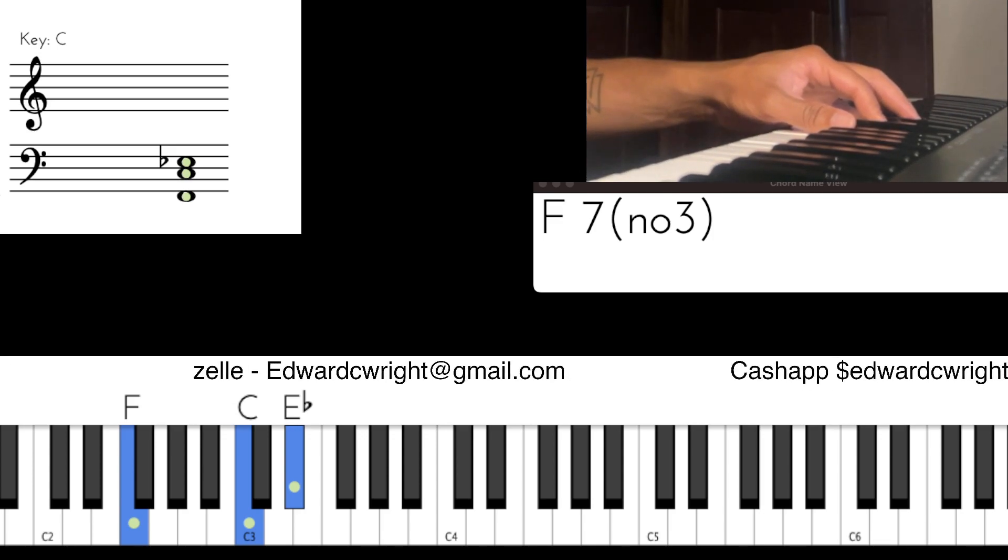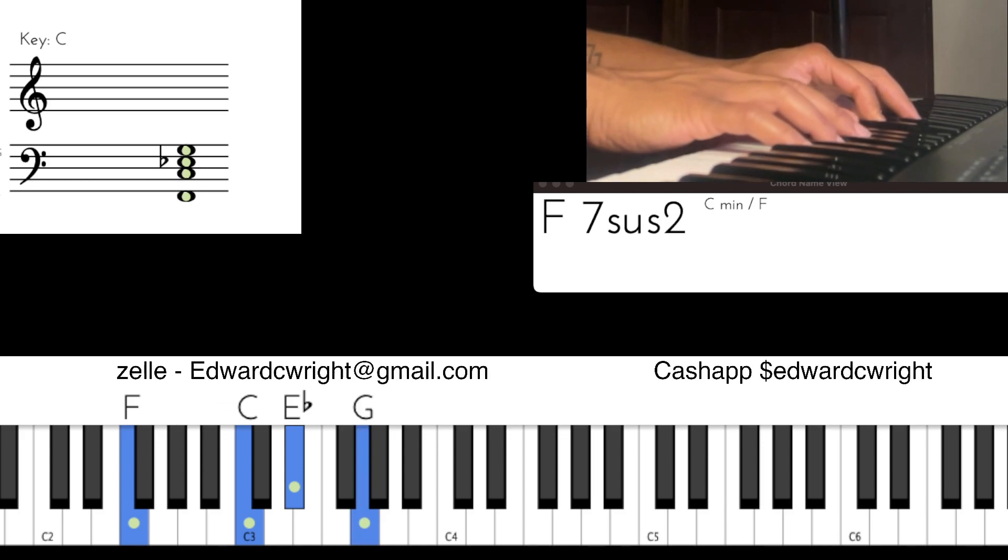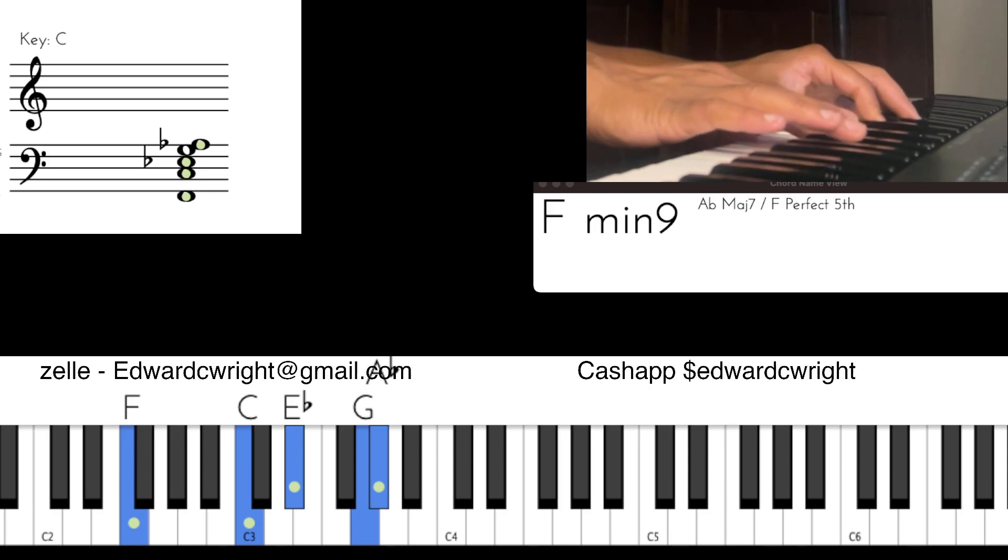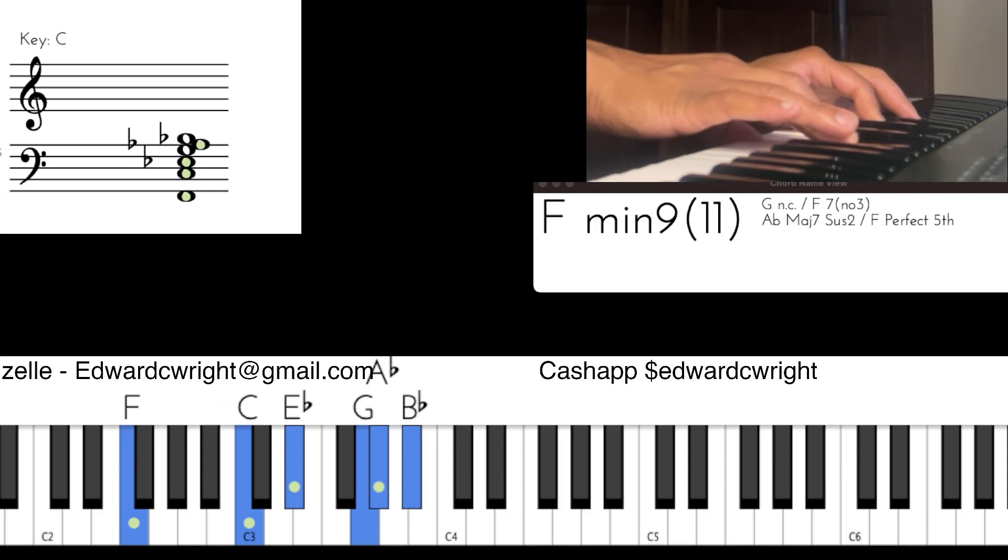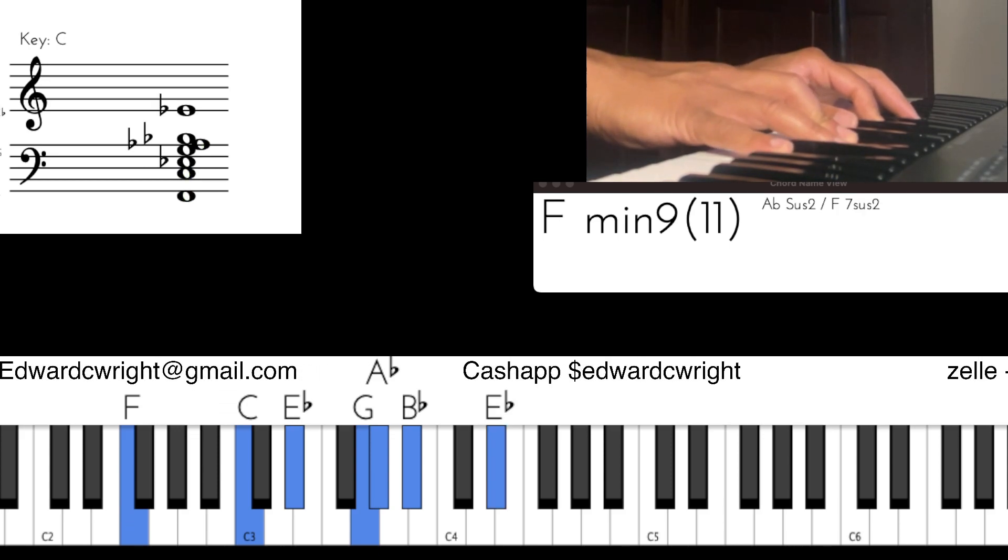F, C, and E flat. Now in our right hand, we have the nine, which is the two, G, the three, the minor third, which is A flat, the four, which is B flat, the flat seven, which is E flat. F minor nine eleven.